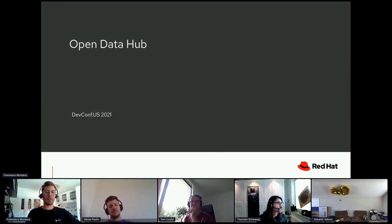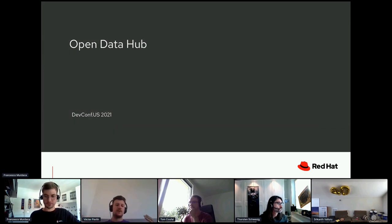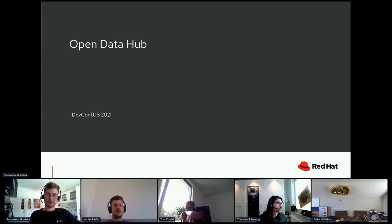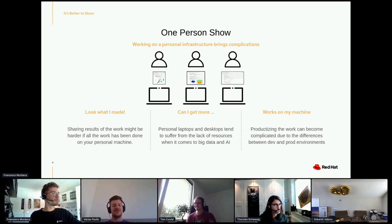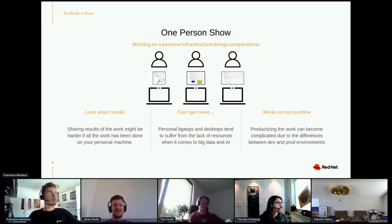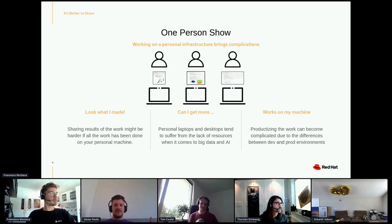I'm going to talk a bit about Open Data Hub, which is the part of this workshop where you're going to be doing the AI. Obviously it's on OpenShift. I'll first try to tell a story — sorry for the orange color, I couldn't change it to red to match the rest of the presentation. These are slides I created before in a different template. Obviously it's technology and always works, just not for me.